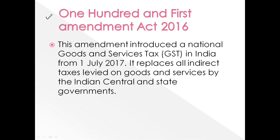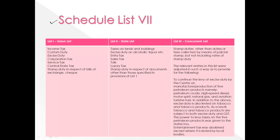This brings us to the first introductory part: the 101st Amendment Act, which introduced GST in India from 1st July 2017. It replaces all indirect taxes on goods and services levied by state and central governments. This leads us to Schedule 7, which is divided into three lists: the Union List, the State List, and the Concurrent List. Some items in the Concurrent List still attract excise and customs duties and are outside the preview of GST.